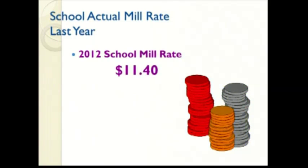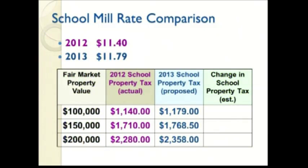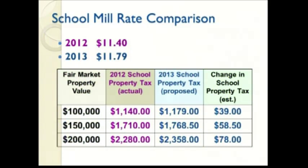Comparing to last year, the actual mill rate was $11.40. Looking at those same property values, you can see what the school property tax amount is going to go up from one year to the next: on a $100,000 property, $39; on the $150,000 property, $58.50; and on the $200,000 property, $78 in the school district portion.